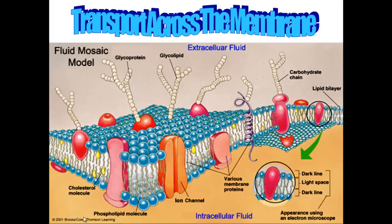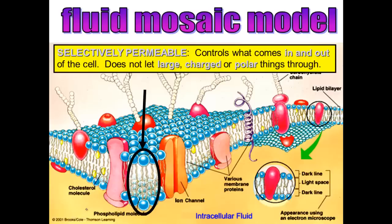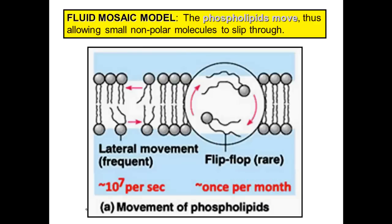Welcome to our Unit 4 screencast, all about how things move and are transported across the plasma membrane. The plasma membrane is selectively permeable — it controls what can come into the cell and what can leave. It doesn't let things that are large, charged, or polar come through. Things that are small, uncharged, and non-polar can come through because the phospholipids are always moving around, allowing those molecules to slip right through that fatty membrane.